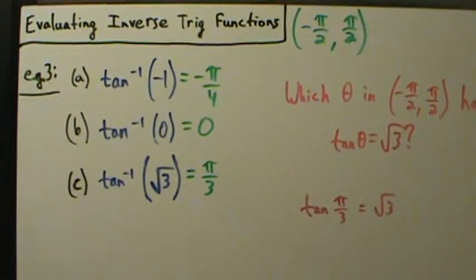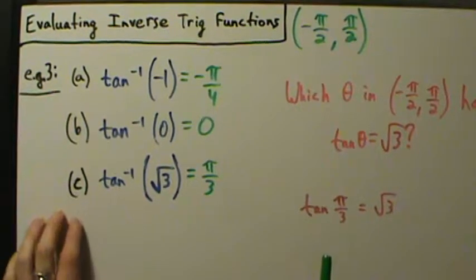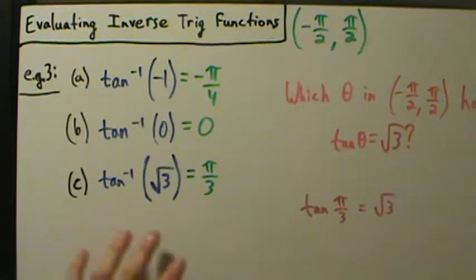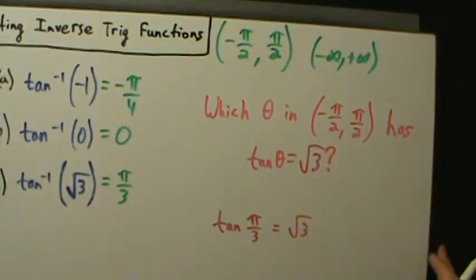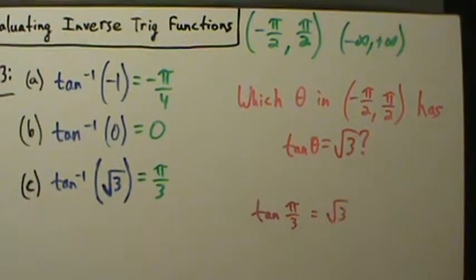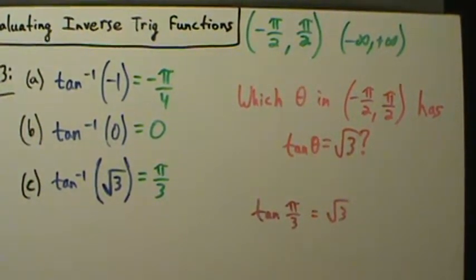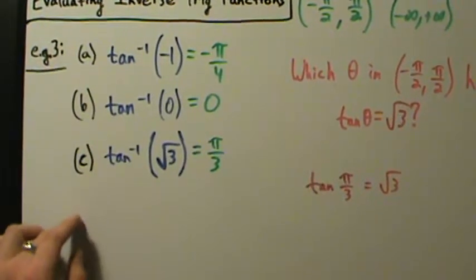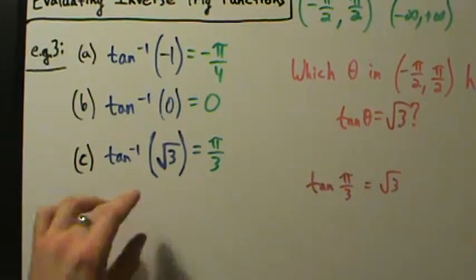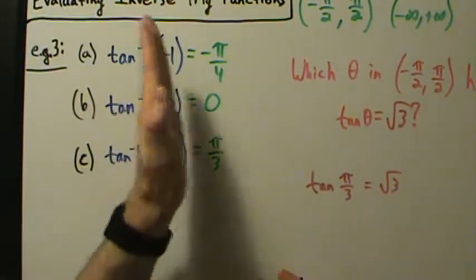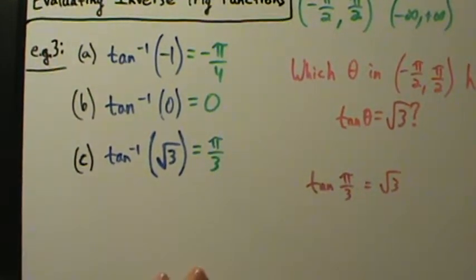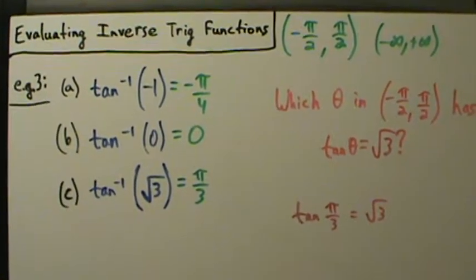That's it for evaluating inverse trig functions. Unlike examples 1 and 2, we can't do a part D with no solution here, because the domain of the inverse tangent function is all real numbers — you can take the inverse tangent of any real number you want and you'll always get a value back. It might not work out nicely with unit circle numbers, but you can use a calculator, and we'll talk about that in a later video. That's example 3 with evaluating inverse trig functions using the inverse tangent function.